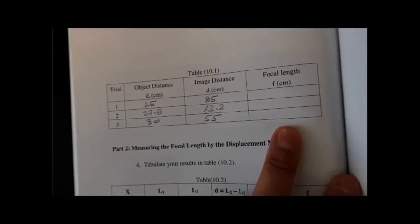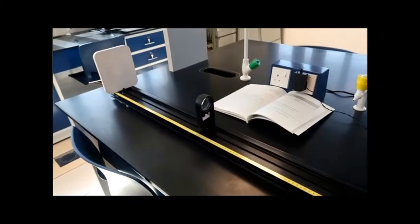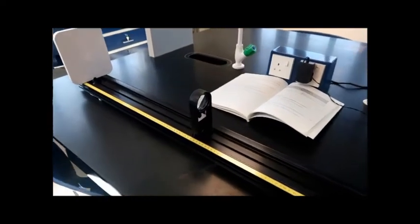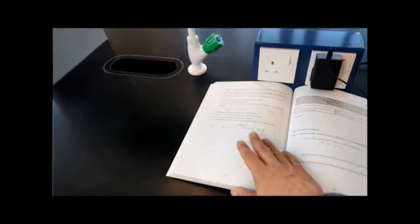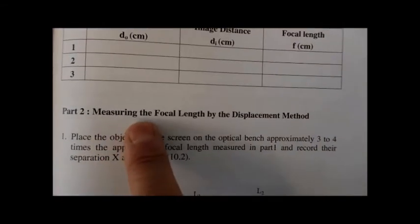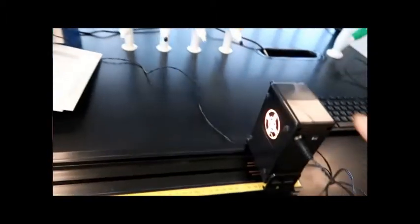Now in this third part, we will measure the focal length of this lens by a third method called the displacement method. It uses the same setup as the second part — the object, the lens, and the screen. I will move the lens until I see a sharp image on the screen.